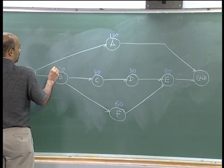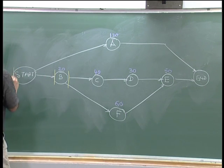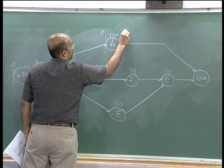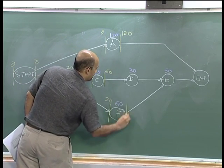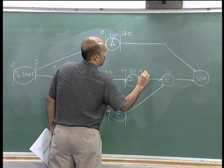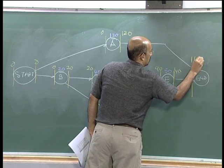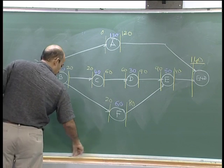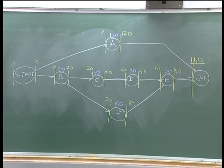You might have used a tabulation or the network. Setting up a tabulation takes a little more time for a problem of this nature, so I would suggest using the network. So we have 0, 0, 20, 60. If 140 is where the end is — I am not going to do the backward pass, let us just go through it. The critical path is B, C, D, E.